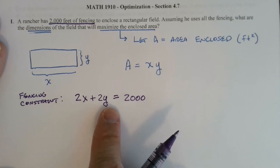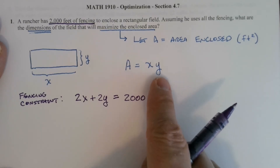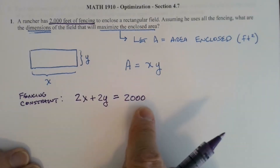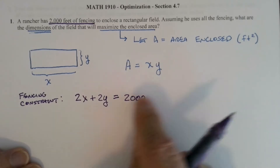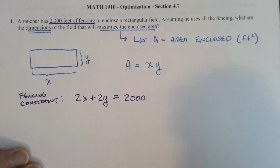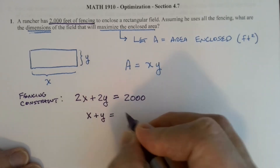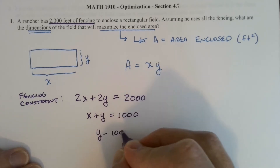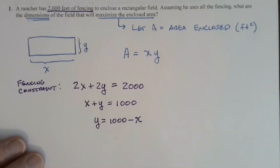This equation relates x and y, so I can solve for one variable and substitute into the area formula. I'll solve for y. Dividing both sides by 2 and subtracting x gives y = 1,000 − x.